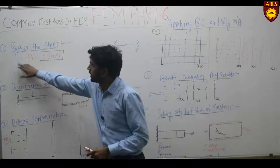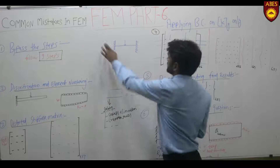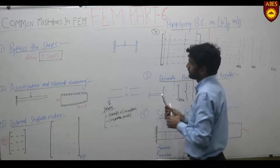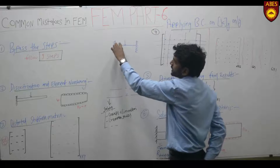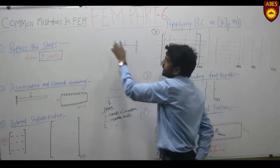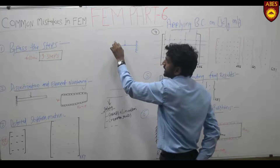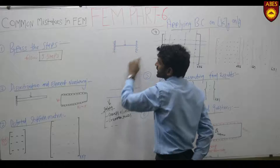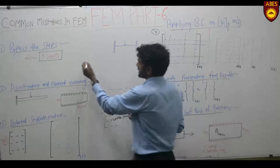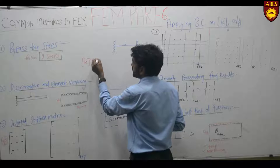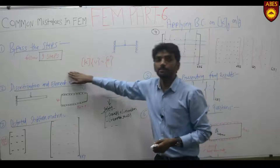Mistake number 1 is bypassing the steps. While solving any problem, such as a simple beam problem, you need to follow 9 steps. First, discretize the element. Then perform element numbering, then node numbering. Then find out the local stiffness matrix for each element. Then assemble those stiffness matrices. Then find out the nodal displacement vector and the external force vector.